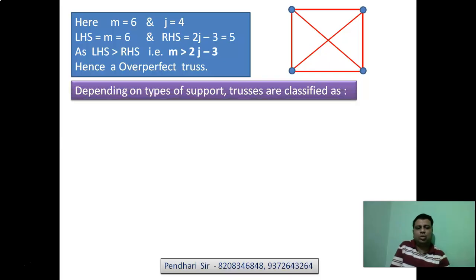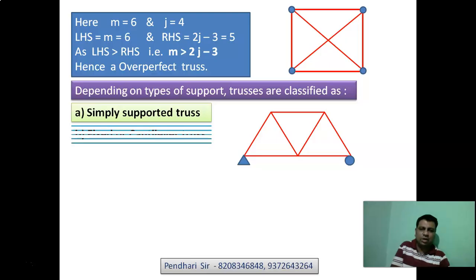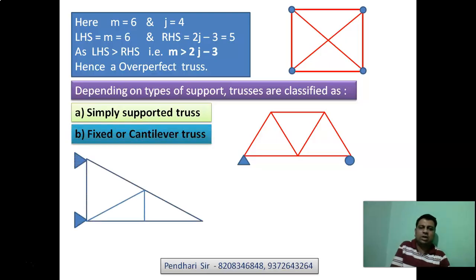Depending on types of support, trusses are classified as simply supported truss. A truss with hinge support at one end and roller support at one end. Hinge has 2 reactions, roller has 1, making a maximum of 3 external reactions. The second type is fixed or cantilever. If one member of the truss is fixed, that is fixed truss, or if a truss has hinge support at 2 joints, that will be cantilever or fixed truss.